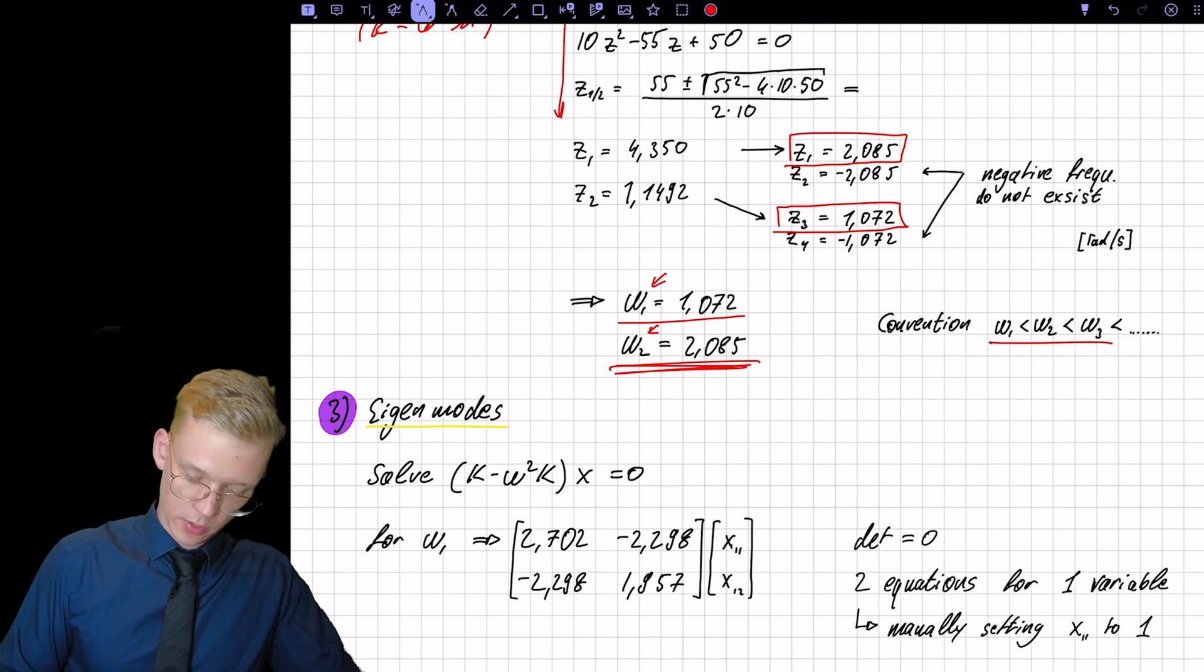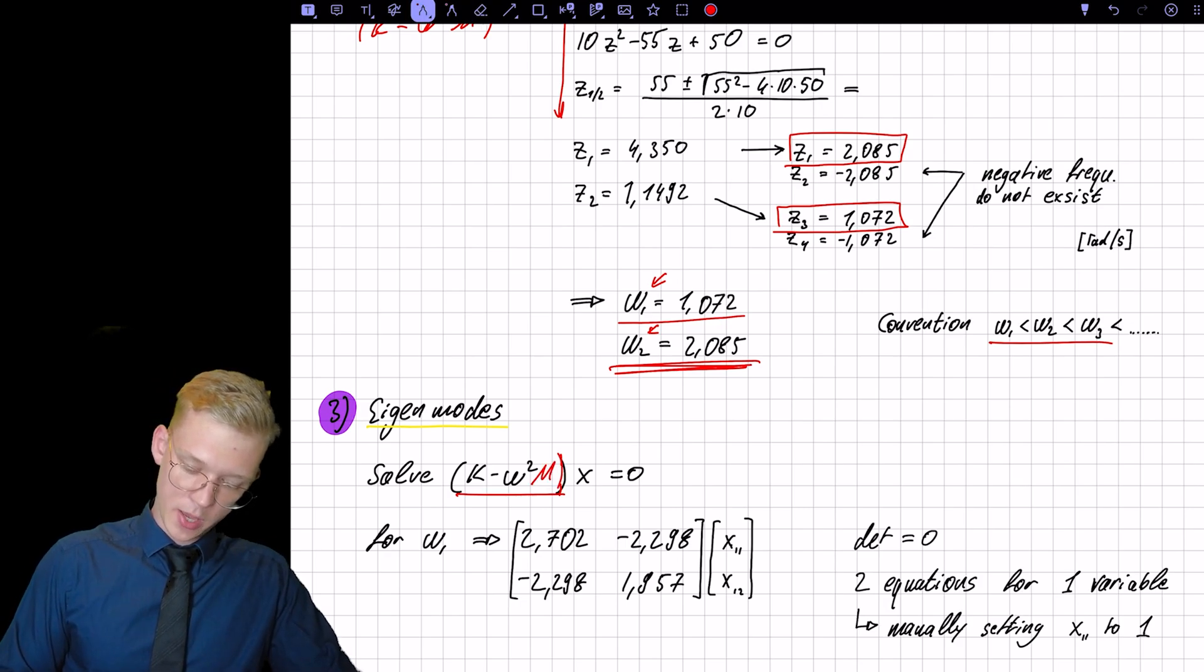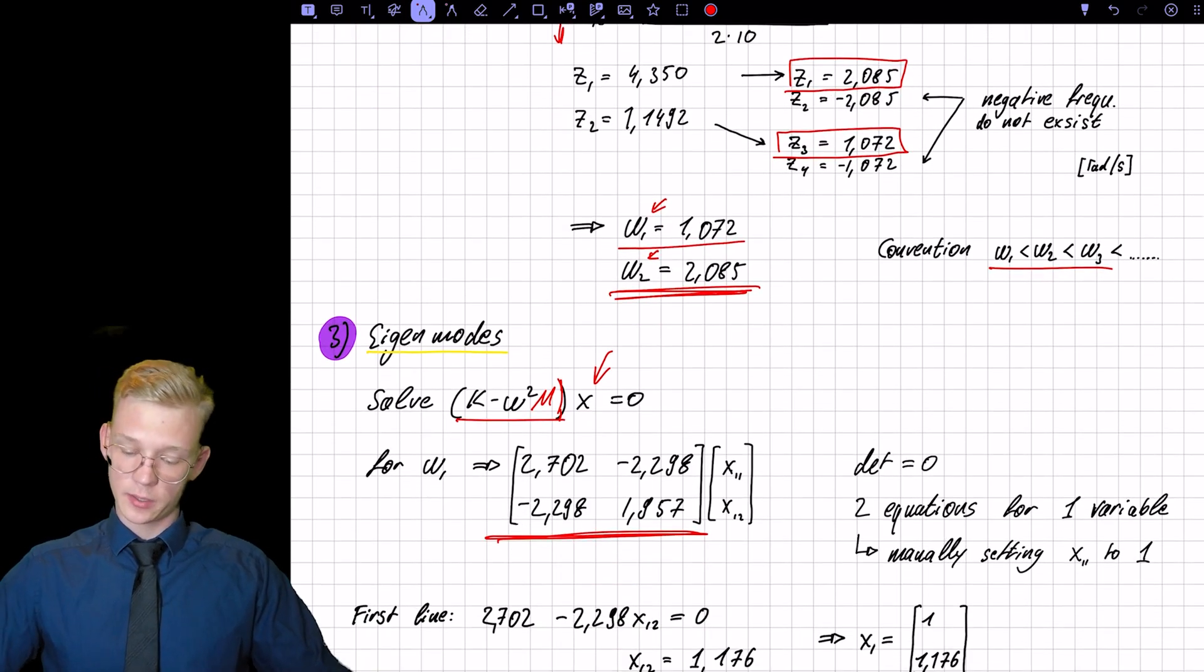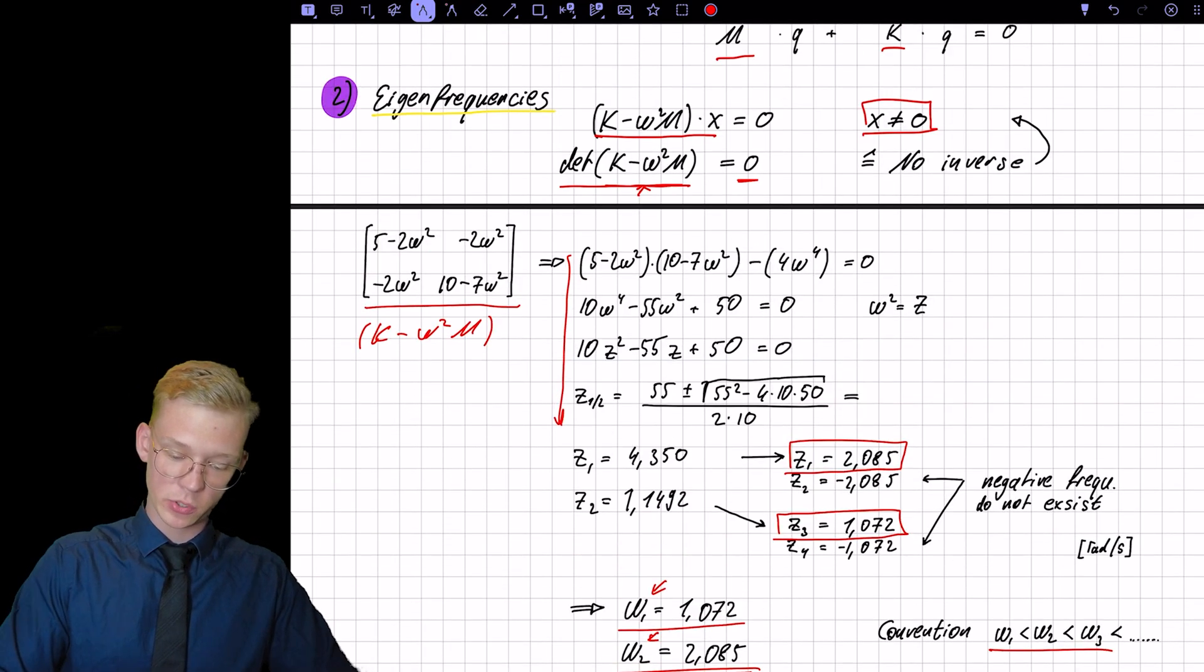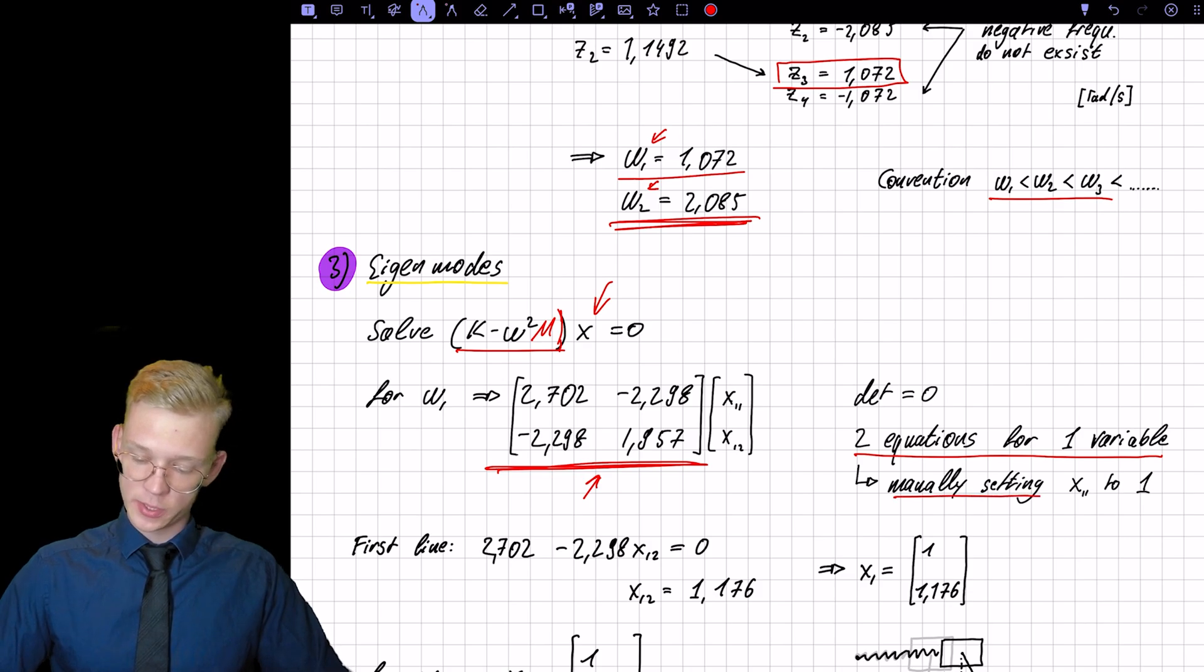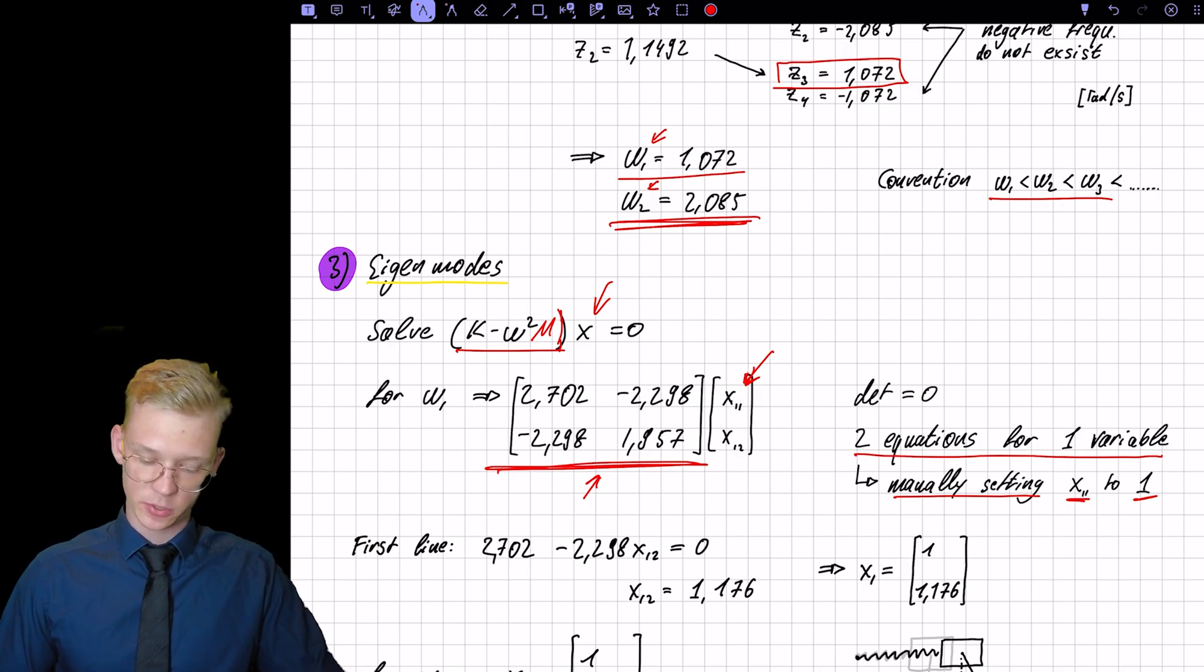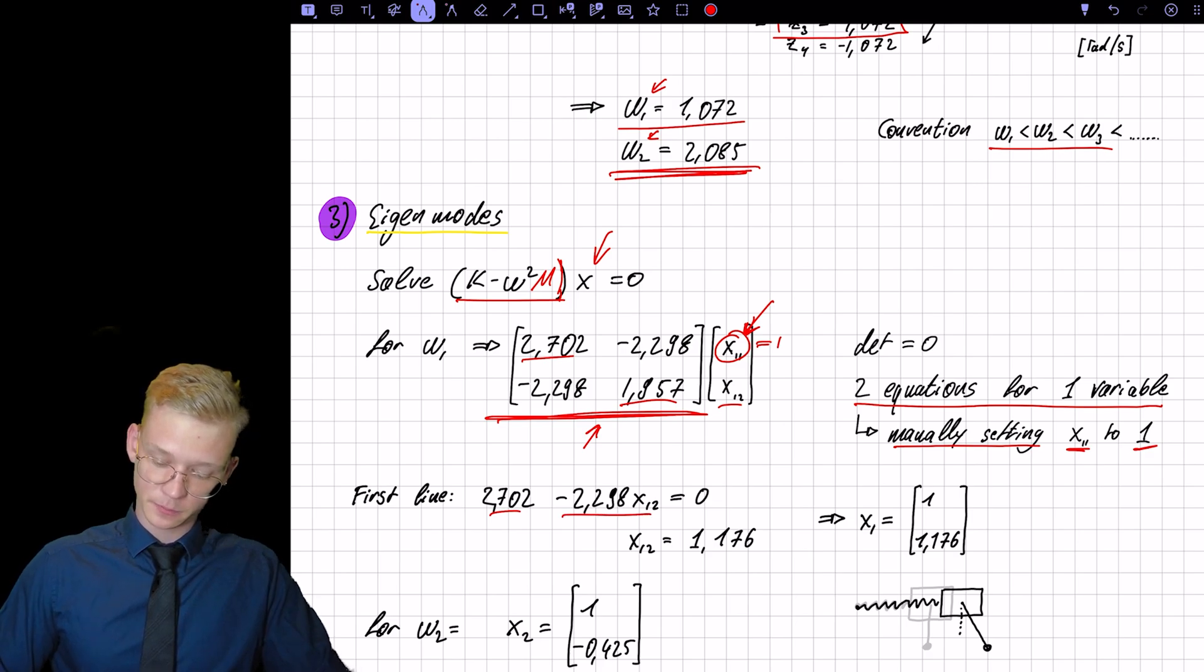Now we have to find the eigenmodes. So we have to solve this system. This has to be a mass matrix. So we have to solve this system. We know this matrix and we now have to find our eigenvector or our eigenmode. We know that we have two equations for one variable because this system is linearly dependent. We designed it in such a way because we said that the determinant is zero. So we have to manually set x11, this value, for example, to one. We can set it to any value because the value itself is not important. The important thing is the ratio. So we set, for now, we just choose one because it's easier to work with. So multiplying one in this case with this value minus this value multiplied with x1.2, this part, will get us 1.176. So this is our first eigenmode.